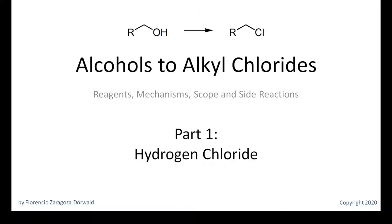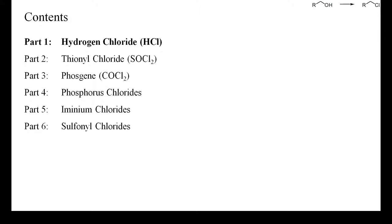Hi, welcome to this first part of my video playlist about the best methods for converting aliphatic alcohols into alkyl chlorides. This first presentation is about the use of hydrogen chloride as the oxychlorinating reagent.